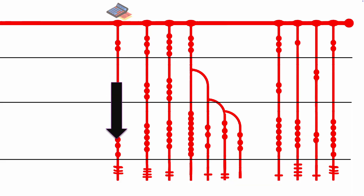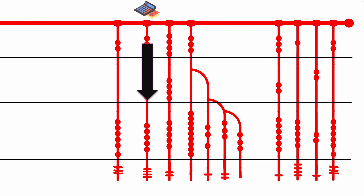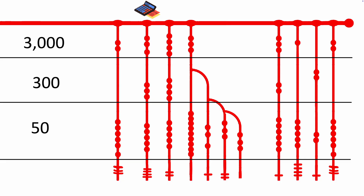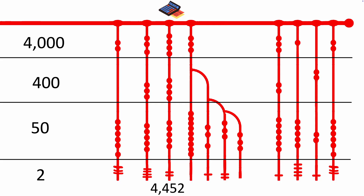Let's try reading some quipus. On the first string, add the knots and their respective numeric values: two in the thousands group, zero in the hundreds, six in the tens, and three ones — for a total of 2,063. The second string: three thousands, three hundreds, five tens, four ones — totaling 3,354. The third string: four thousands, four hundreds, five tens, two ones — totaling 4,452.